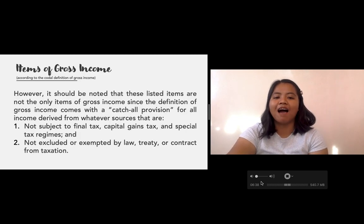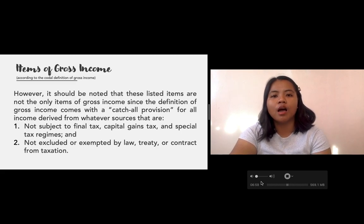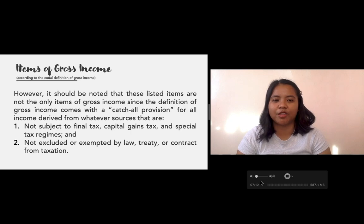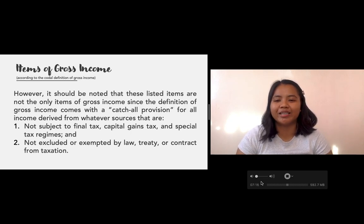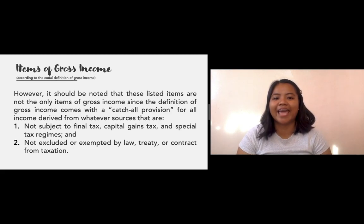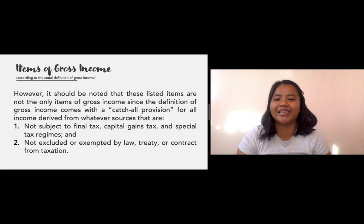However, we have a catch-all provision for gross income — meaning all income derived from whatever sources is included in gross income, as long as these income items are not subject to final tax, capital gains tax, or any special tax regimes, and are not excluded or exempted by law, treaty, or contract from taxation. So basically, all items that accrue to the taxpayer and give a benefit will be considered gross income subject to regular income tax if they don't fall into those categories.